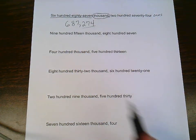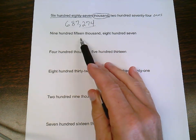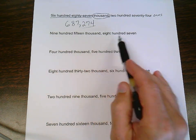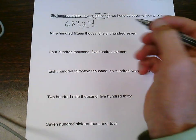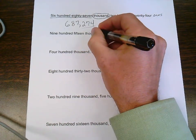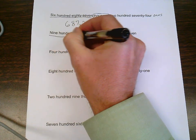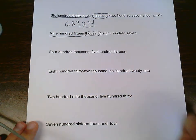On to the next one, 915,807. So I look at the word in front of the comma, thousand, which means this 915 is in the thousand period.